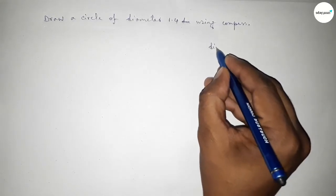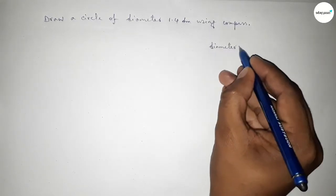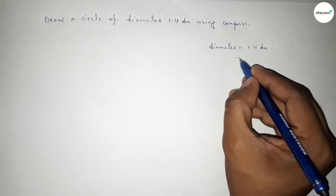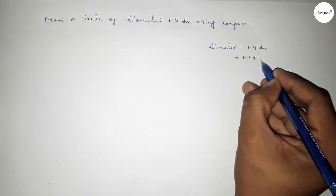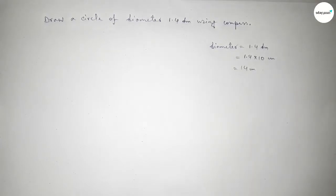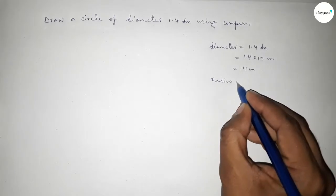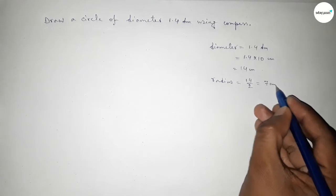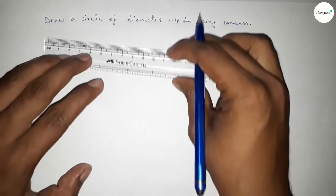First of all, talking about here the diameter equal to 1.4 decimeter. So first converting decimeter into centimeter, so multiplying by 10, so this is 14 centimeter. Now finding the radius, so radius equal to dividing by 2, so this is 7 centimeter.